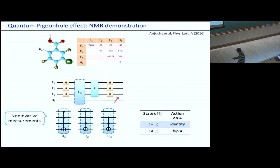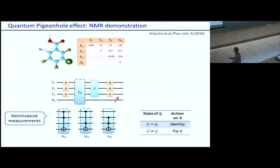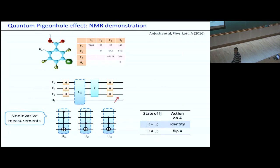A further suggestion is raised: one brute-force approach could be to take three hydrogen ancilla qubits and send the effect of each pair of fluorines onto a separate hydrogen, providing independent ancilla readouts for each pair. The speaker agrees this is a good point and a valid approach, though it has not been done yet.